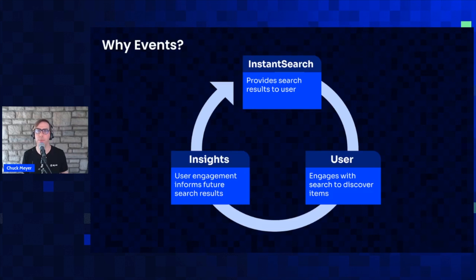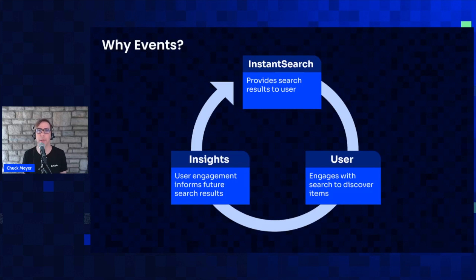As you're setting up a new instant search or a new application front end, you think you've got it right — you've got everything in there, you've configured your index, you think you've got relevance and sorting set up properly. But you really don't know until users start searching and engaging with those search results. Fortunately, Algolia provides a mechanism for collecting that feedback, and that is our Insights API.